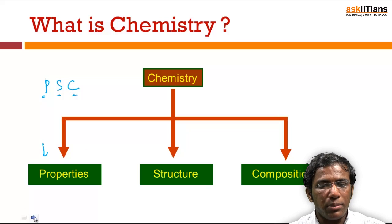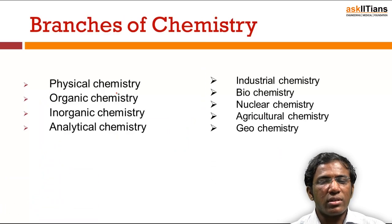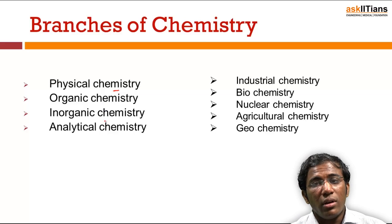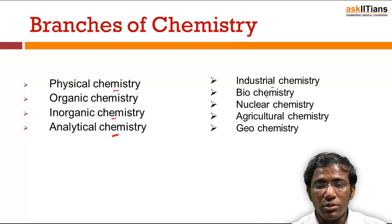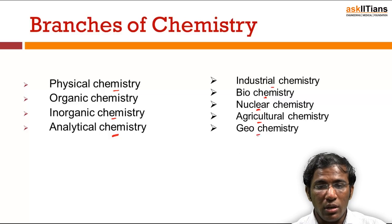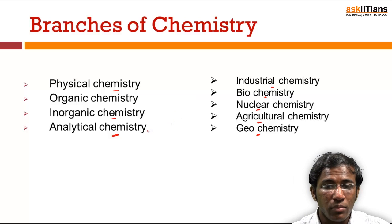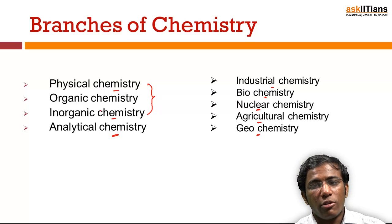Chemistry has many branches. One is physical chemistry. Another is organic chemistry — which is all about the chemistry of carbon-containing compounds. We have inorganic chemistry, analytical chemistry, industrial chemistry, biochemistry, nuclear chemistry, agricultural chemistry, and geochemistry. In JEE we have only three branches: physical, organic, and inorganic chemistry.